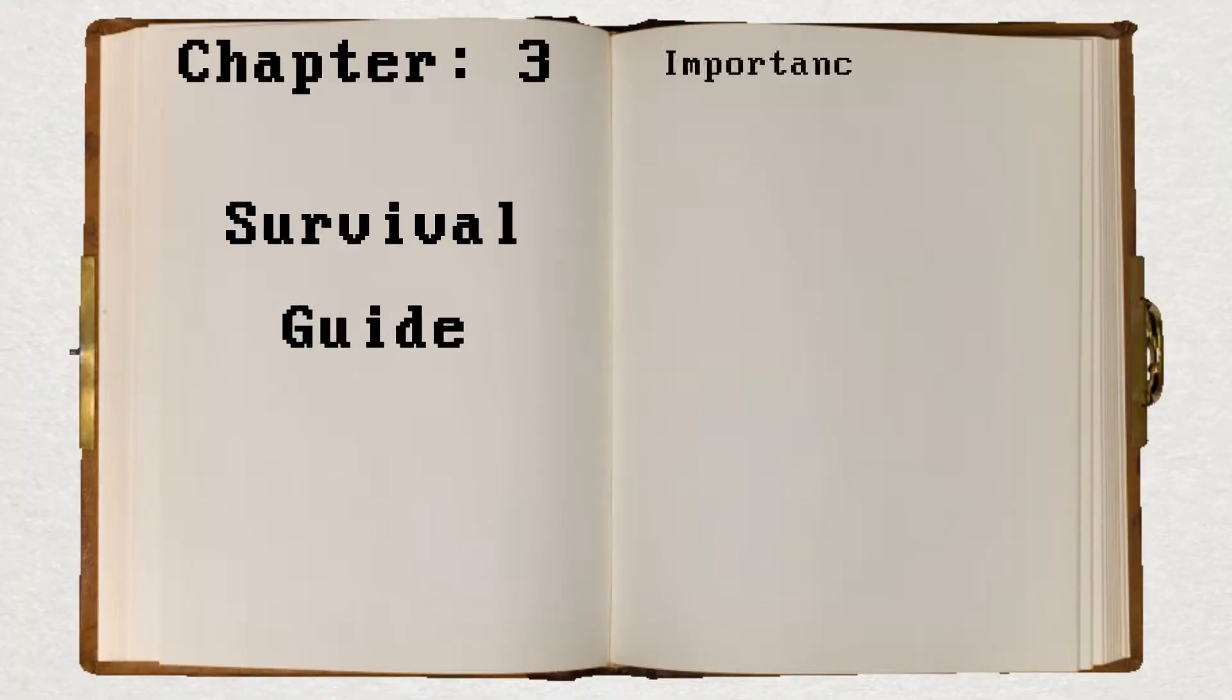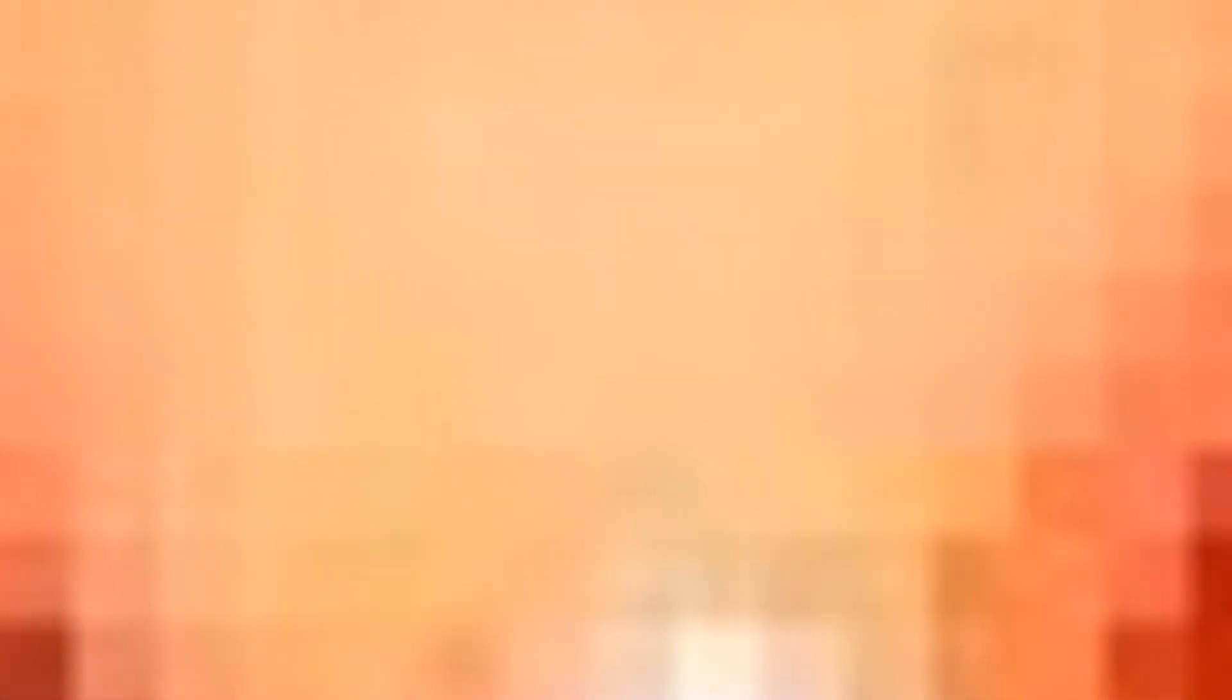Dopamine is a new evolutionary guide for survival. When it is released, it tells your brain to do the thing again and again, like eat more food for example.